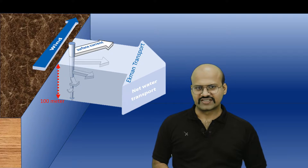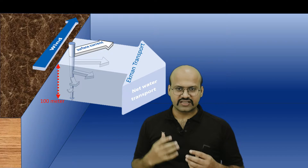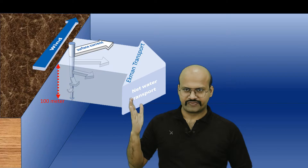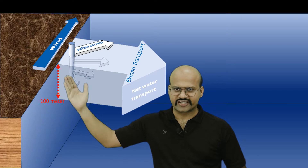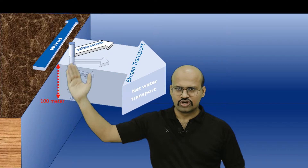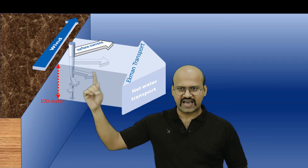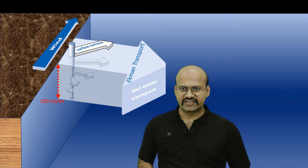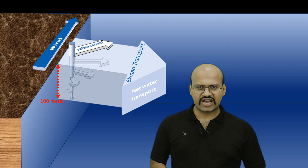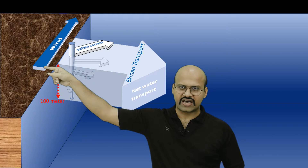The Ekman transport theory says that if wind is blowing parallel to the coastline — on the right side in the northern hemisphere or the left side in the southern hemisphere — the net transport of water across different layers will occur in a direction perpendicular to the wind. Water in different layers moves in directions separated by 45 degrees, creating a spiral known as the Ekman spiral. In this video we will understand why waters in different layers move in different directions and why the net transport is perpendicular to the wind.